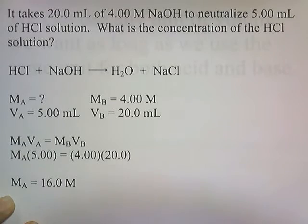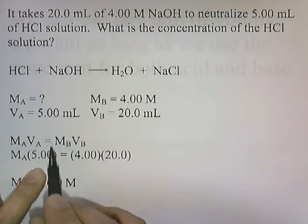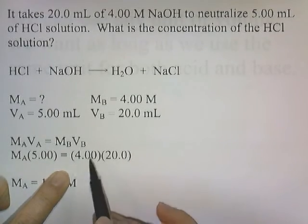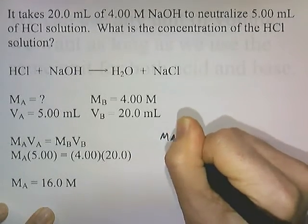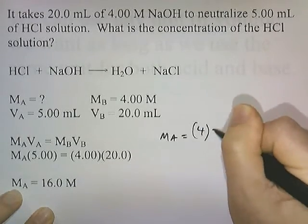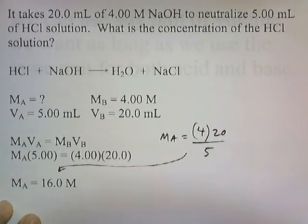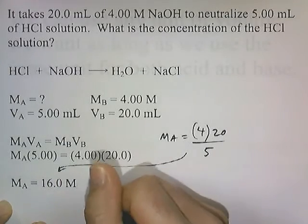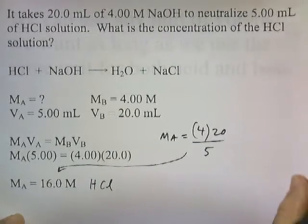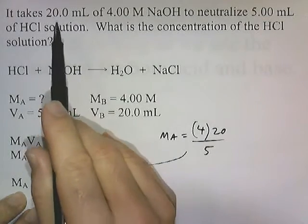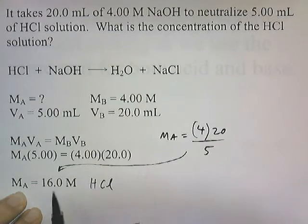Two solutions have neutralized each other, so these expressions have to be equal. MA is what we're solving for, VA is 5, MB is 4, and VB is 20. Solving for MA: MA equals 4 times 20 divided by 5, which gives us 16. So the concentration of the acid solution is 16 molar — that's what it takes to be neutralized by 20 mL of 4-molar NaOH.